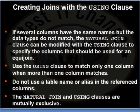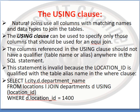Do not use a table name or an alias in the reference clause. The natural join and USING clauses are mutually exclusive. Natural join uses all columns with matching name and data type to join the tables. The USING clause can be used to specify only those columns that should be used for an equijoin. The column referenced in the USING clause should not have a qualifier, table name, or alias anywhere in the SQL statement.